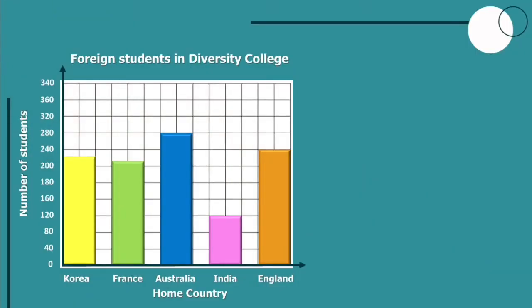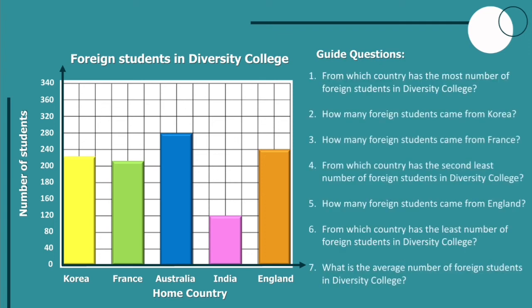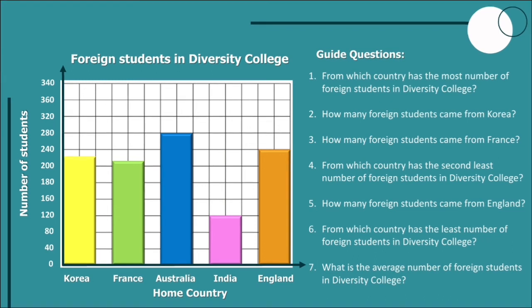For our last example, we have the graph of foreign students in Diversity College. We have students from Korea, France, Australia, India, and England. On the left side is the number of students from the different countries mentioned. Let's proceed to the guide questions. From which country has the most number of foreign students in Diversity College? As we can see, the blue bar is the tallest, and that is Australia.